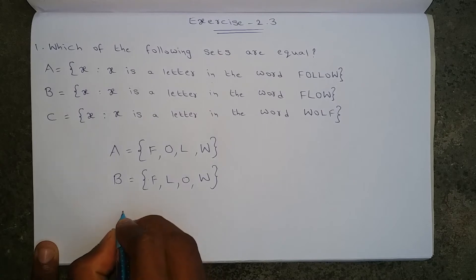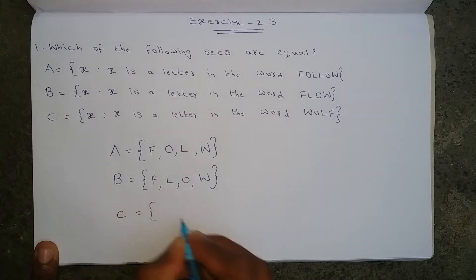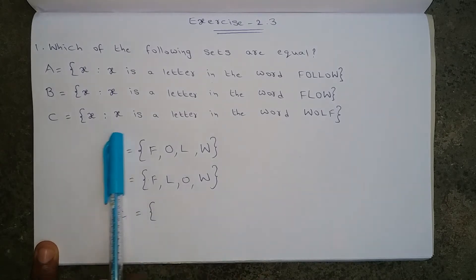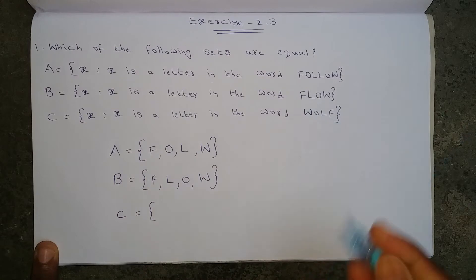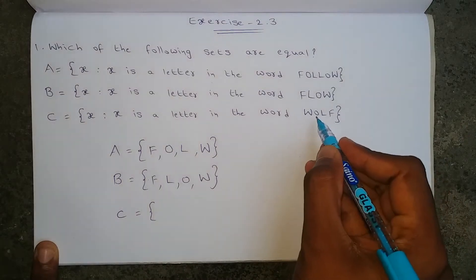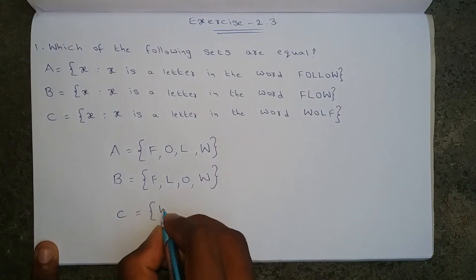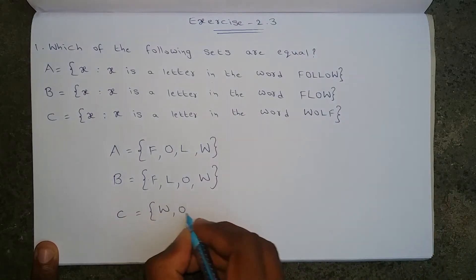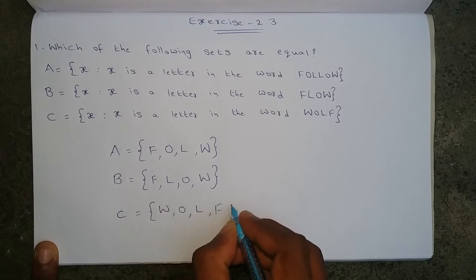Next, set C: X such that X is a letter in the word WOLF. The letters are W, O, L, F.